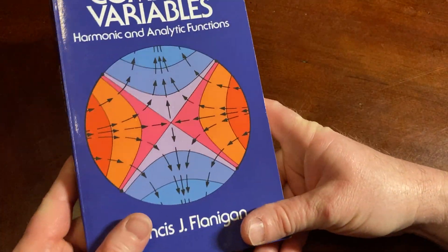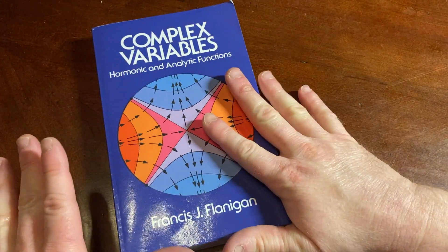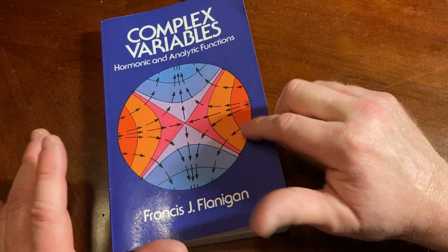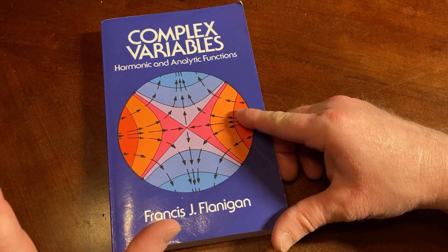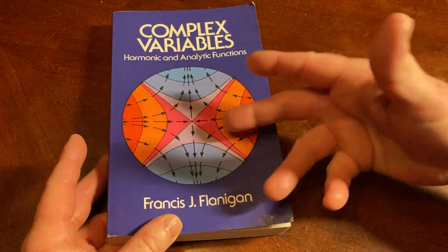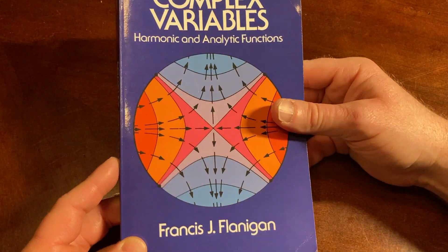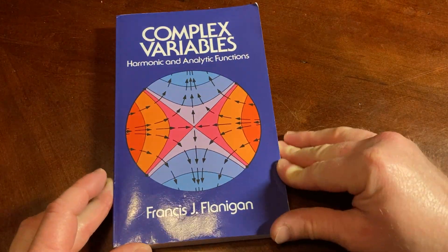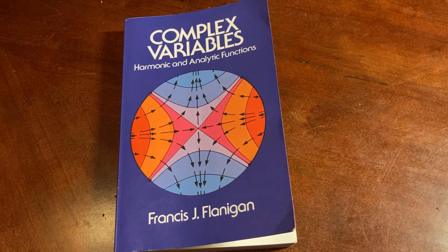This was not my first complex variables book. My first complex variables book, by the way, was also a Dover book, but it wasn't this one. It was the one by Detman. That one's also really good, but this one's excellent. This one has a cooler cover. Anyways, it's Complex Variables by Flanagan. Just wanted to make a video to show you one of my books. Good luck.